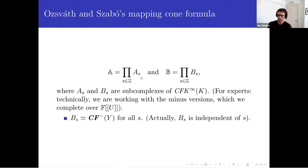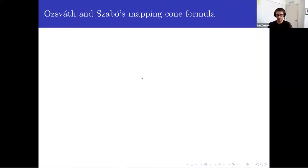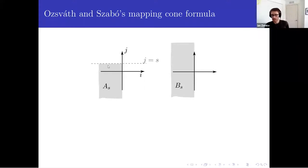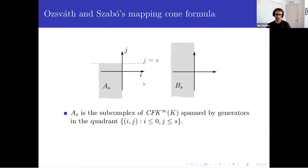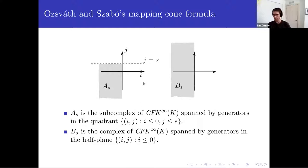B sub S is actually just the underlying complex of the three-manifold, or it's homotopy equivalent to that. A sub S — remember that C of K infinity has this Z plus Z filtration — A sub S is kind of a quadrant, and it depends on S: S tells you the level to cut the quadrant at. B sub S is a half plane; B sub S doesn't change as S changes, but A sub S does. For every S we have one of these complexes. The blackboard bold A is the direct product. In words: A sub S is a subcomplex of C of K infinity spanned by the generators in that quadrant. B sub S is the subcomplex of C of K infinity spanned by generators in the half plane with I less than or equal to zero.